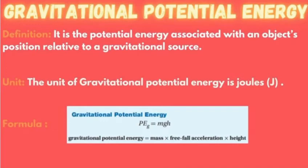Gravitational Potential Energy Definition: It is the potential energy associated with an object's position relative to a gravitational source. Unit: The unit of gravitational potential energy is joules, and this is its formula.